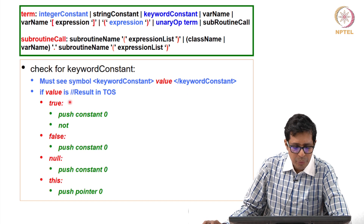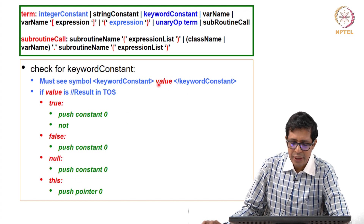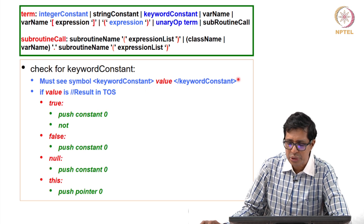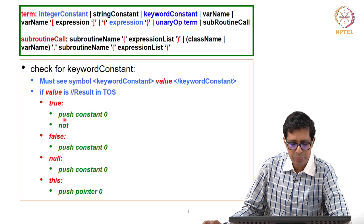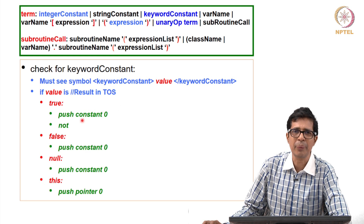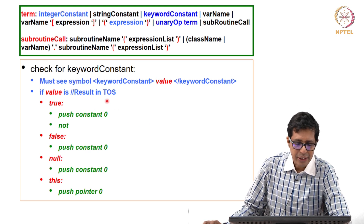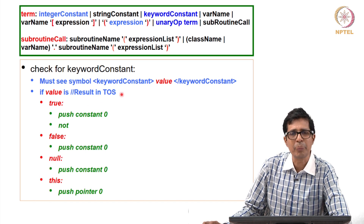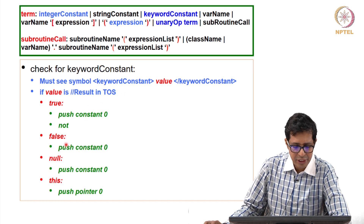The keyword constant value can be one of four values: true, false, null, or this. If you see keyword constant and the value is true, we push constant 0 and do a not — this becomes all 1s (1111), which represents true. The result must be on top of the stack. If it is false, you just push constant 0.